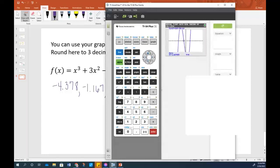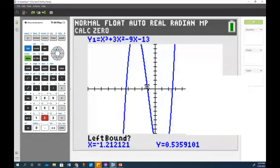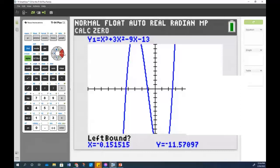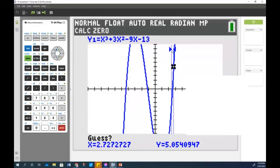All right, we've got one more to find. So I'm going to go second trace, which is my calculate, choose option two for a zero. I want to be to the left of this point. So I'm going to hit my right arrow key until my cursor is somewhere right in that area. So I'm below it, but I'm to the left of it. Enter. Keep going a little further. Now I'm to the right of it. So I've given my calculator this really narrow field to look between and say, I know there's a zero somewhere in there. And it's at 2.545.